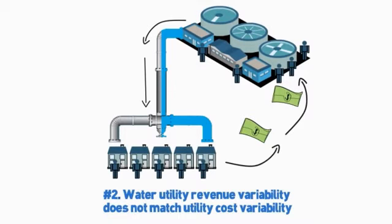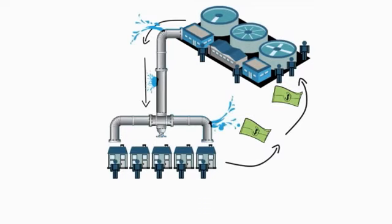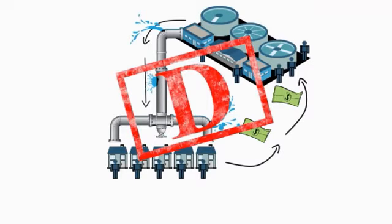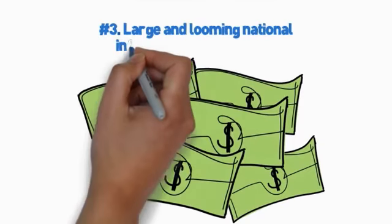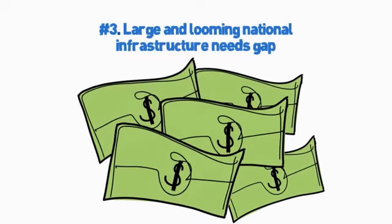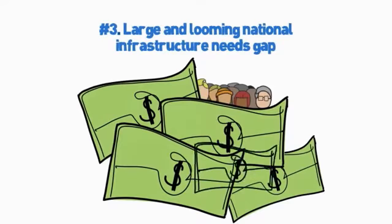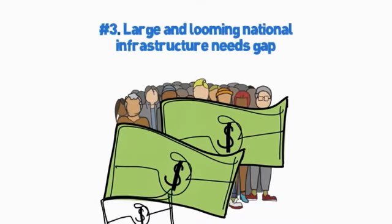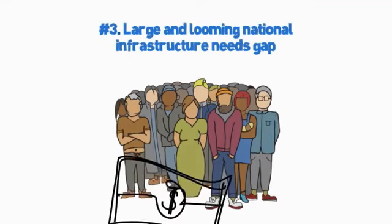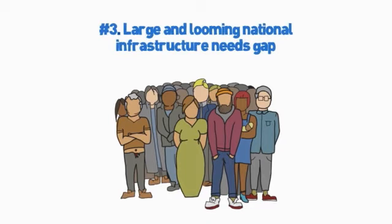These two issues alone would create a financial challenge for utilities in the best of circumstances. Unfortunately, the industry is not facing the best of circumstances. The American Society of Civil Engineers gave the nation's drinking water and wastewater infrastructure a grade of D — passing, but barely. Much of the current infrastructure, which was installed decades ago, will need to be rehabilitated or replaced in the very near future. The American Water Works Association and the U.S. Environmental Protection Agency agree that there is a large and looming national infrastructure needs gap. The amount of subsidized funding available will not cover it. Utilities will have to generate even more revenues to pay for this upcoming wave of infrastructure reinvestment, most likely coming from increased rates. Remember that downward spiral? Covering the costs of these needs may speed that up.